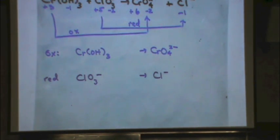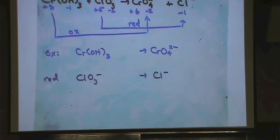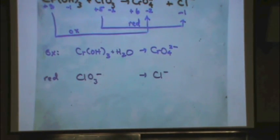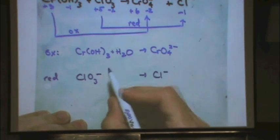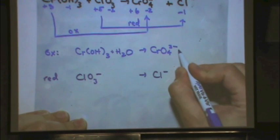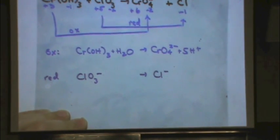Step 1 for the oxidation half reaction: balance whatever is not oxygen or hydrogen — that's chromium, one on each side, done. Step 2: balance the oxygen. There are 4 on the right and 3 on the left, so I need one water. Step 3: balance the hydrogens — there are 5, so I add 5 H⁺. Step 4: balance the charge — zero on the left, plus 3 on the right, so I need 3 electrons. By the way, these types of problems are almost always on the final — free 10 to 15 points if you follow the steps.